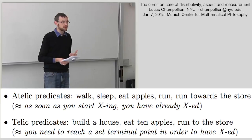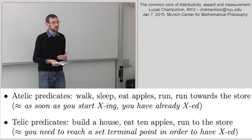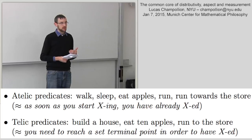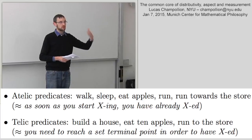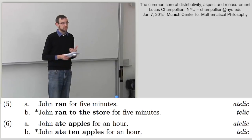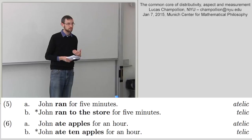By aspect I mean the difference between telic and atelic predicates. An atelic predicate is one where, as soon as you engage in it, you've already engaged in it — for example, 'run' is atelic because as soon as you start running you've already run. 'Run a mile' by contrast is telic: it's not the case that as soon as you start running a mile you've already run a mile. Telic predicates need to reach a set terminal point before they count as completed. Atelic predicates are compatible with 'for'-adverbials like 'for five hours' — you can say 'John ran for five hours' but not 'John ran a mile for five hours.'